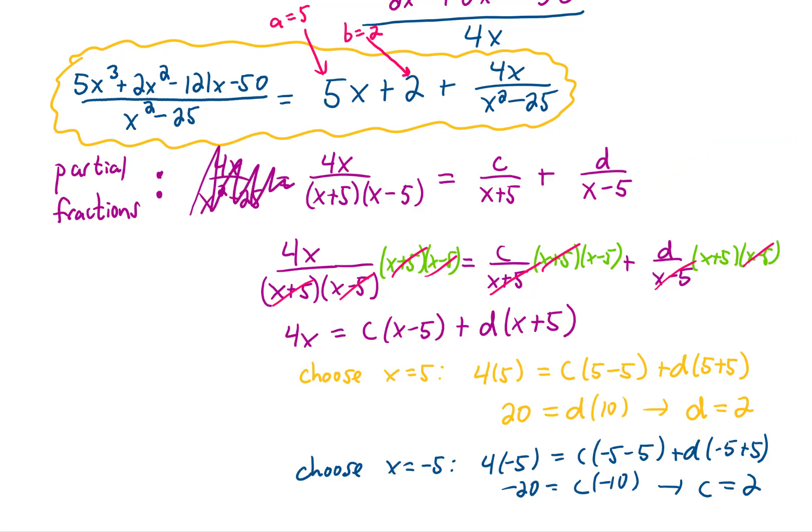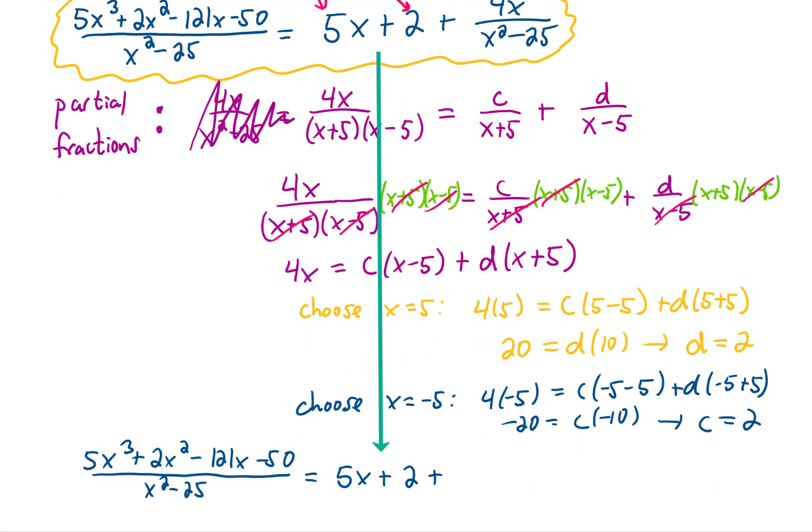Now putting this all together, we found that we can rewrite the original integrand, which was this big mess up here, as the following. We get 5x plus 2 after doing the long division. Then we split up this final term into a 2 over x plus 5 plus another 2 over x minus 5.